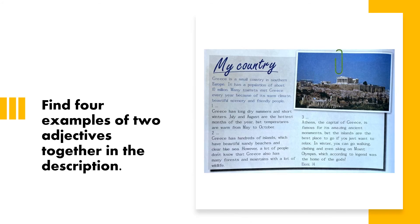Now, let's find four examples of two adjectives used together in the description. The first one, from paragraph one, is 'long dry' — long dry summers.